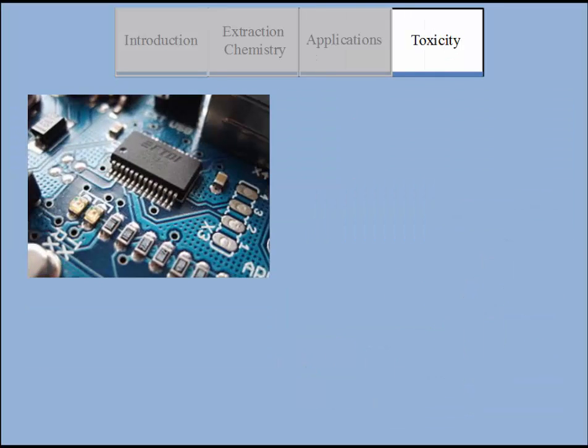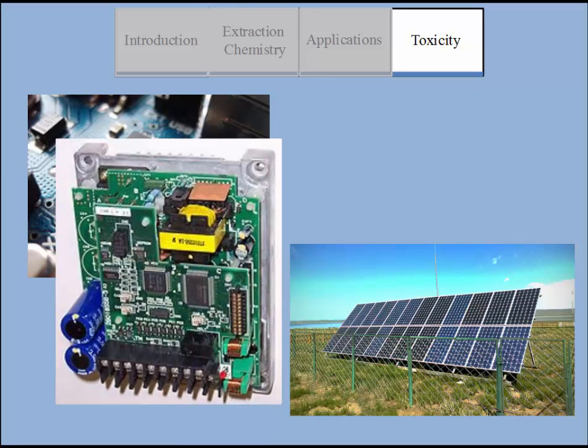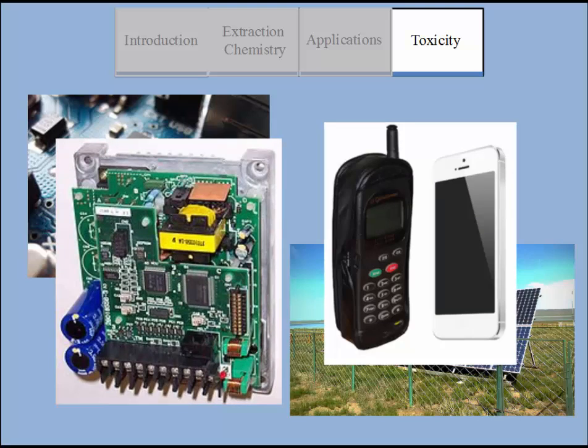Famous usage for germanium is in circuits for wireless communication. It is tested that using both silicon and germanium in appliances creates faster connections than using silicon alone.